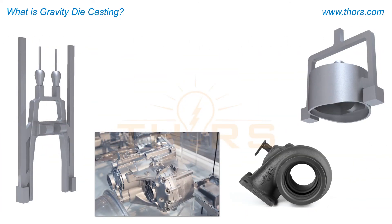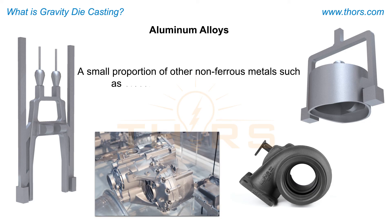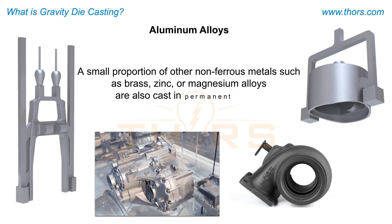Gravity die casting is primarily used to cast aluminum alloys. A small proportion of other non-ferrous metals such as brass, zinc, or magnesium alloys are also cast in permanent molds.